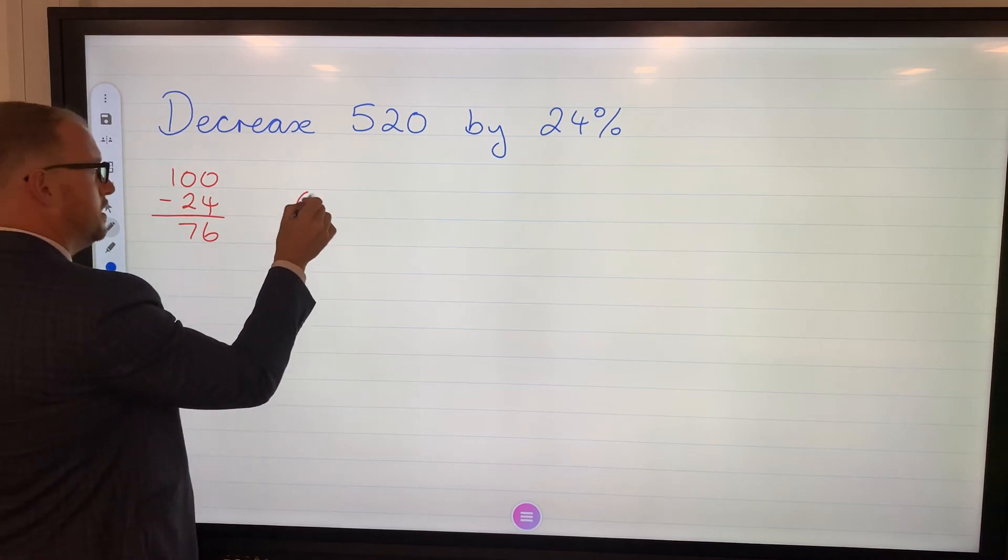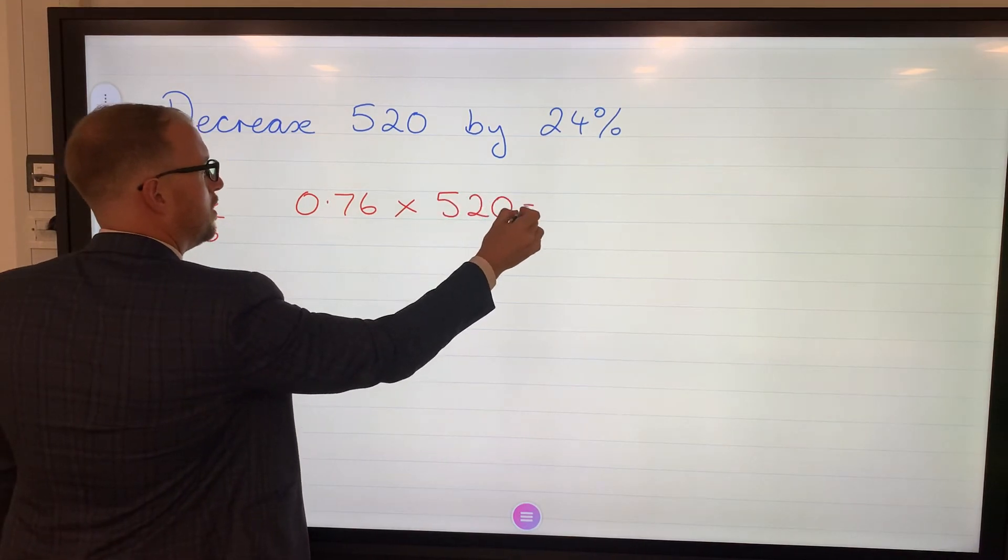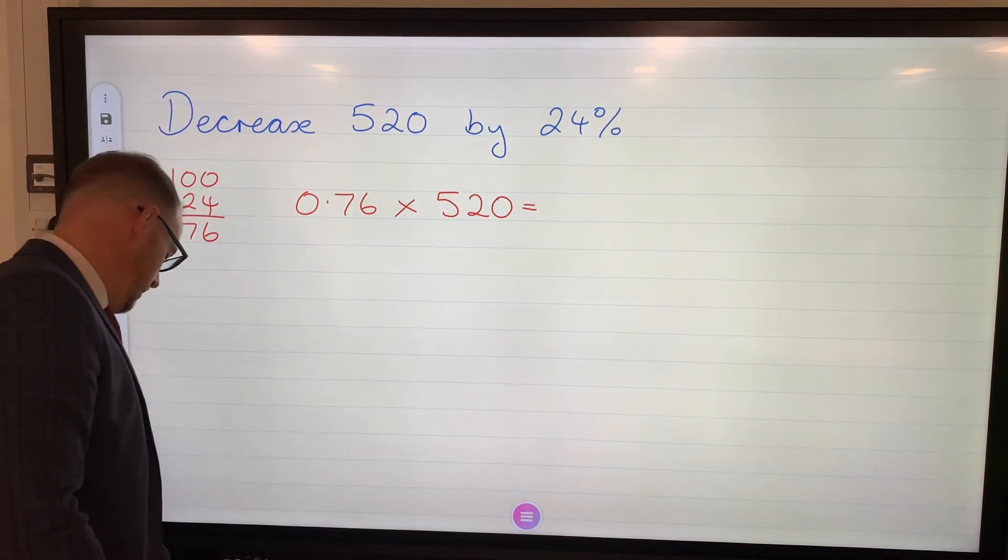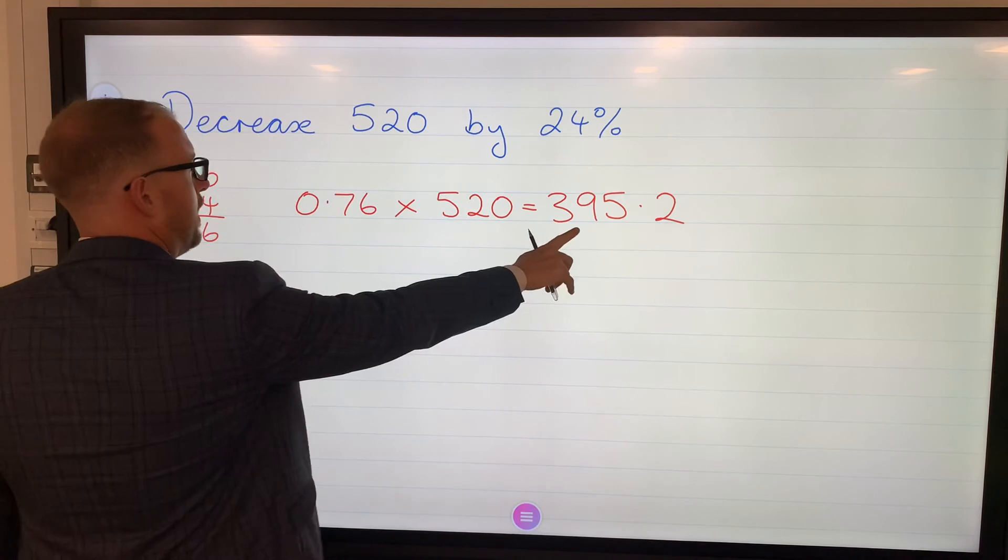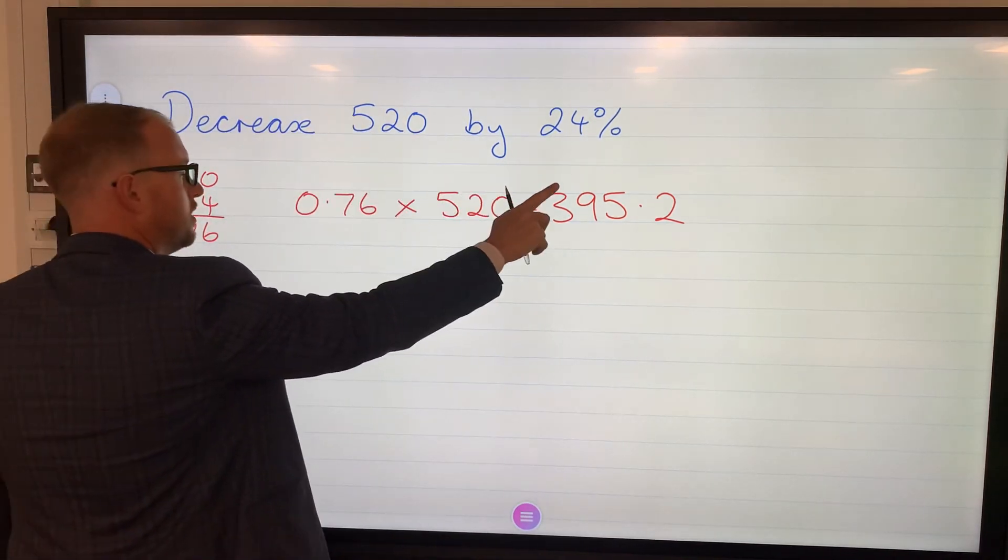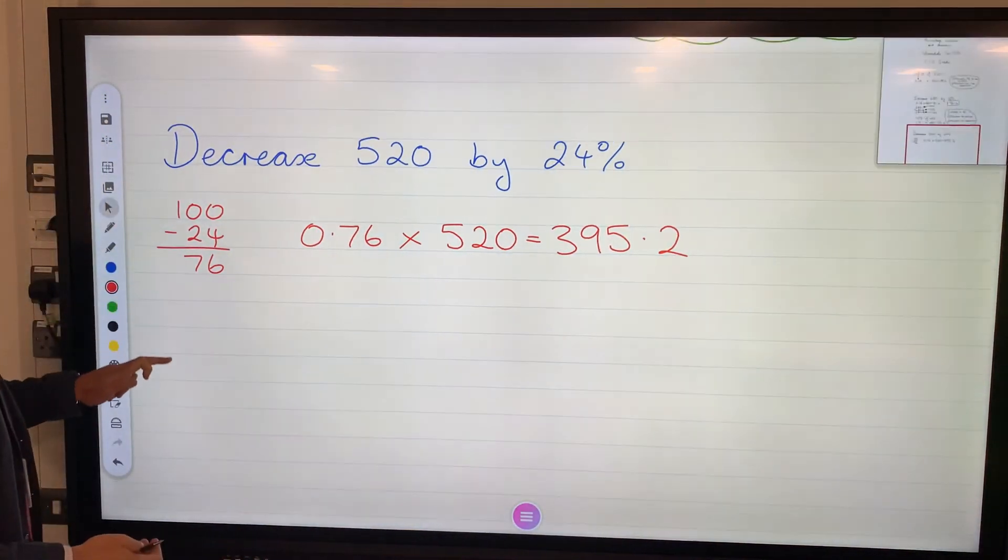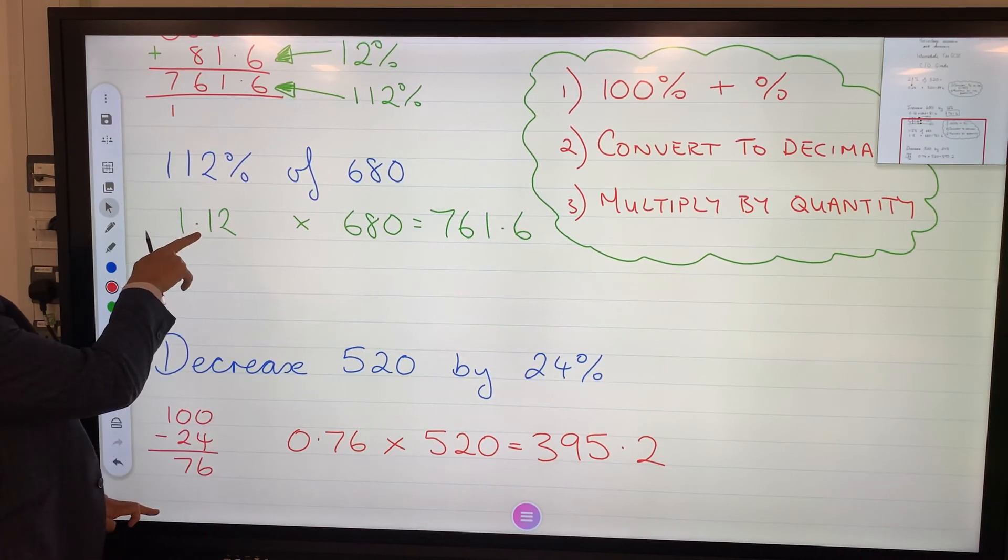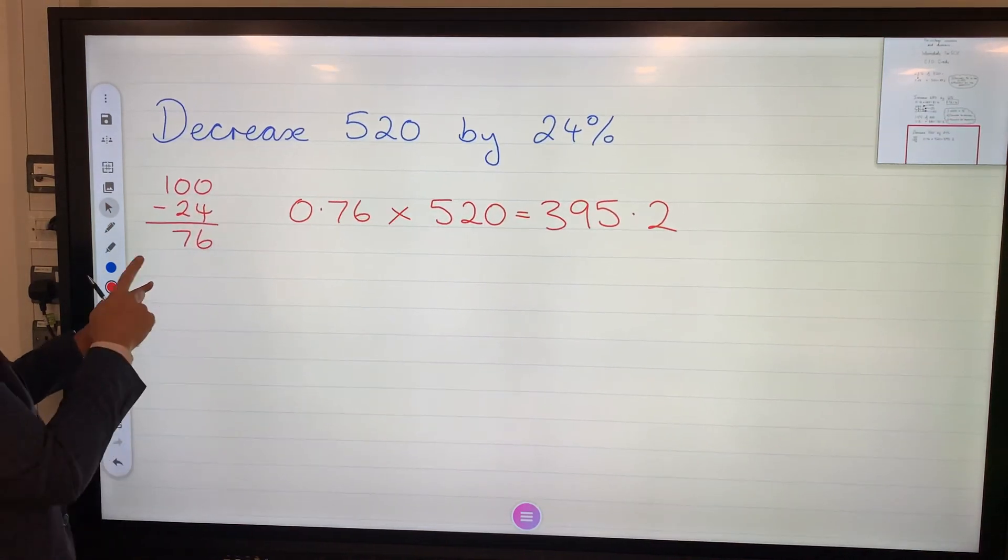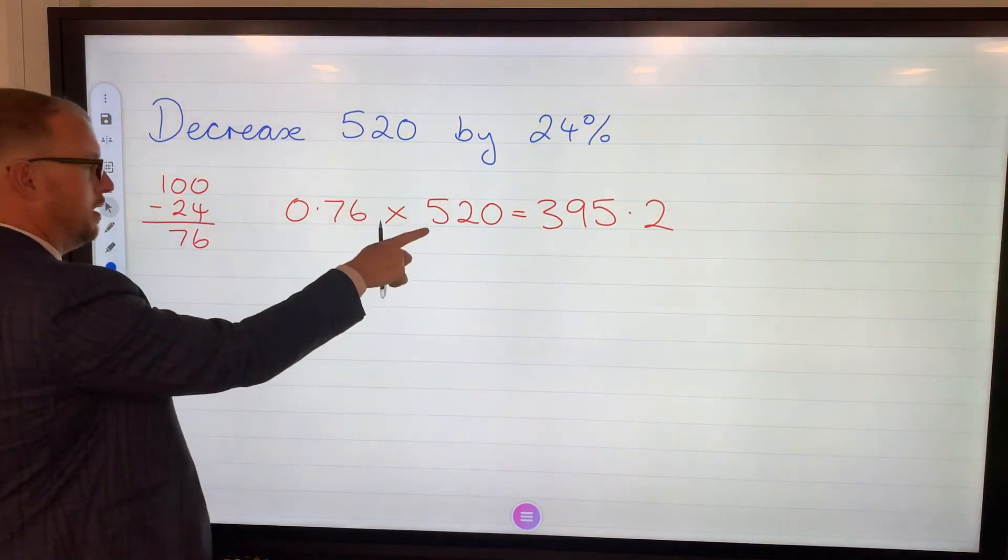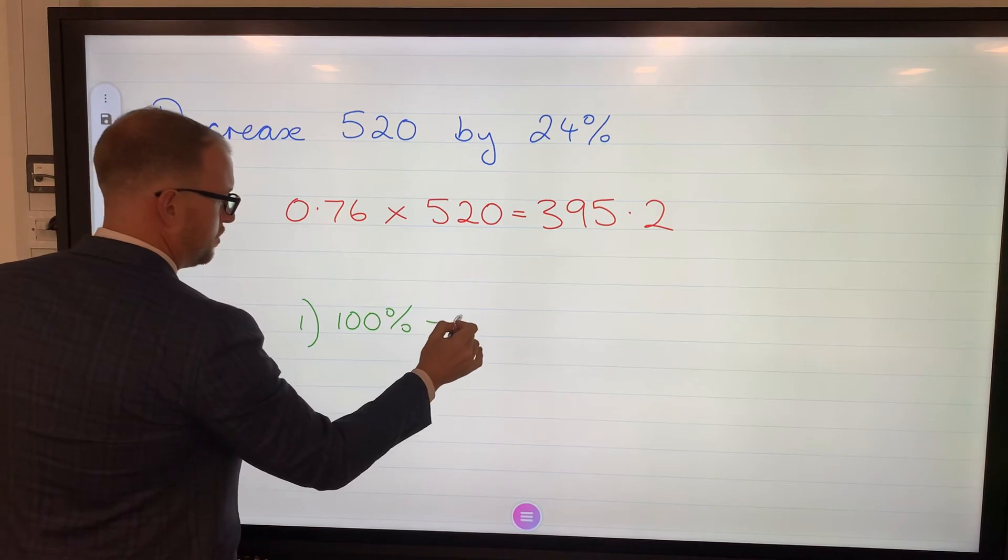Convert that to a decimal, 0.76, multiplied by the quantity. We then have a percentage decrease and we have 395.2. That number is smaller, you can see it's decreased. Of course as I say we could have worked out 24 and then taken away afterwards, but from the increase we realize we could have added it on at the start, then convert, multiply. Decrease, subtract from 100, convert, multiply.